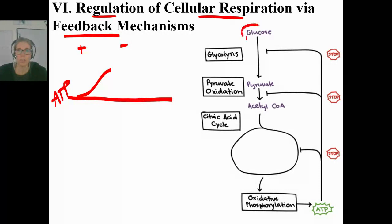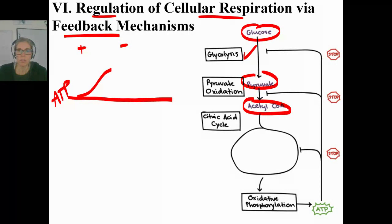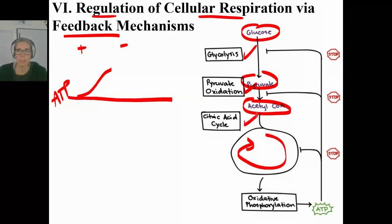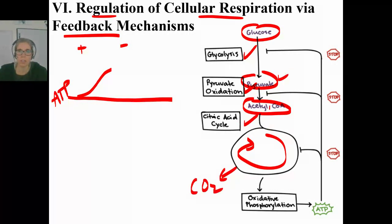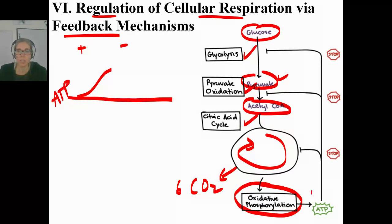Here is glucose and it's broken down to pyruvate in glycolysis, then broken down to acetyl-CoA in pyruvate oxidation or pre-Krebs. Then here's the Krebs cycle, or the citric acid cycle, in which you're breaking glucose all the way down to CO2. What you're doing is ripping the electrons off, sending them to the electron transport chain, and finally making some ATP.